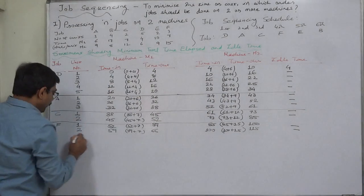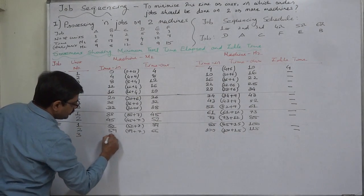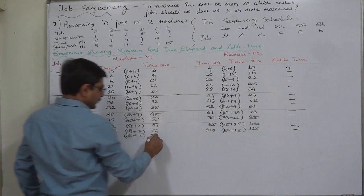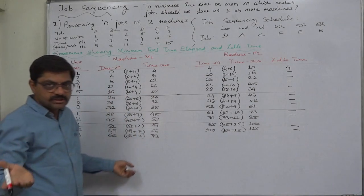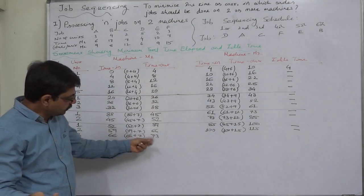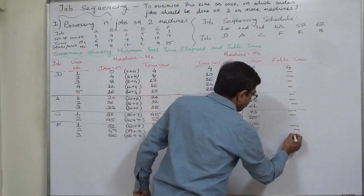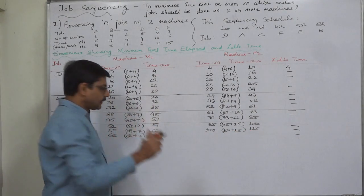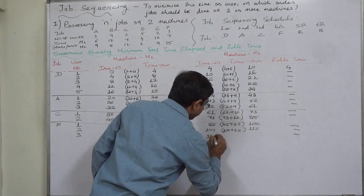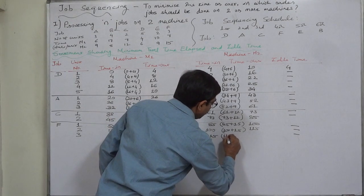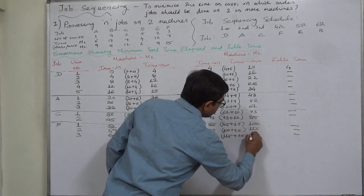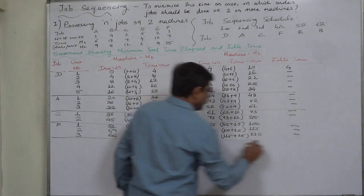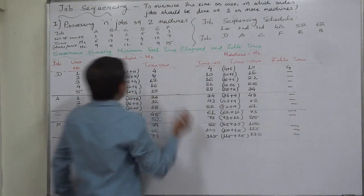Third unit of F on machine 1: time in is 66, 66 plus 7 equals 73. The machine is not waiting but the unit is waiting, so no idle time. 73 or 115, whichever is later: 115 becomes time in, 115 plus 15 equals 130 for time out on machine 2. Job F with 3 units is now over.